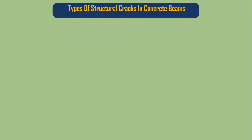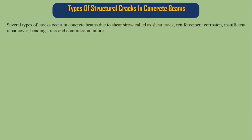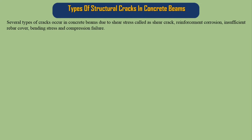Types of structural cracks in concrete beams: Several types of cracks occur in concrete beams due to shear stress, called shear cracks, reinforcement corrosion, insufficient rebar cover, bending stress, and compression failure.